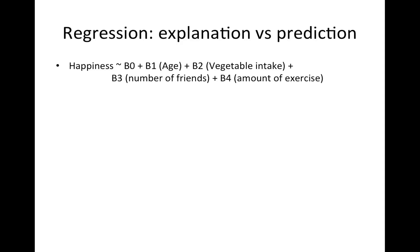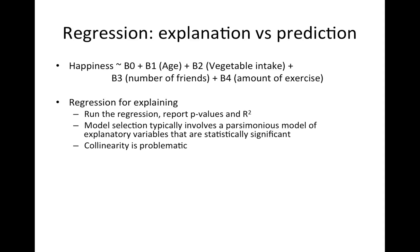If I'm using this regression for explanation, I'm just going to run the regression, report p-values, perhaps report the overall R-squared. My model selection would involve kicking out things that aren't significant typically. I would specifically look at these beta estimates to describe the relationships between these different things. Collinearity would be a problem, so if amount of exercise and vegetable intake were highly collinear we would have to think about how to deal with that.